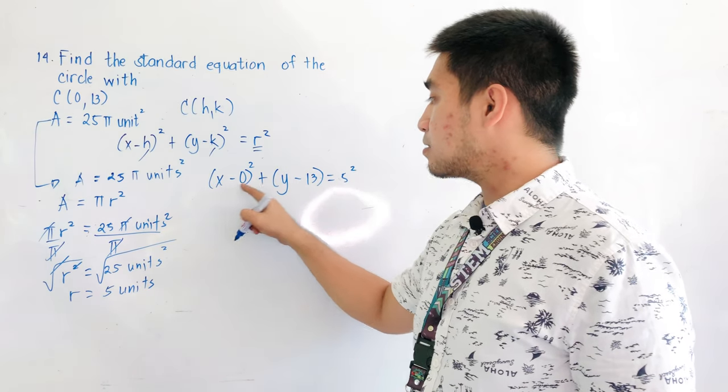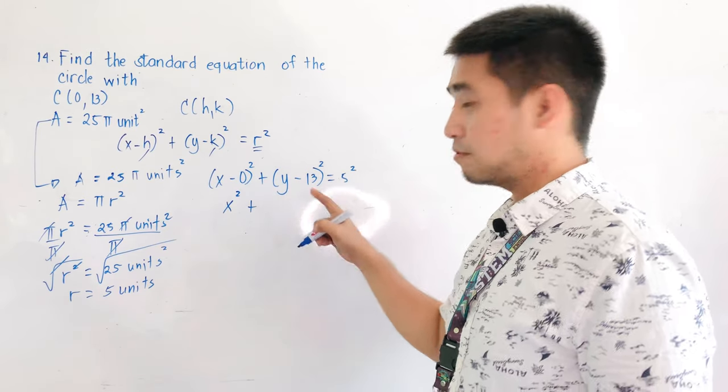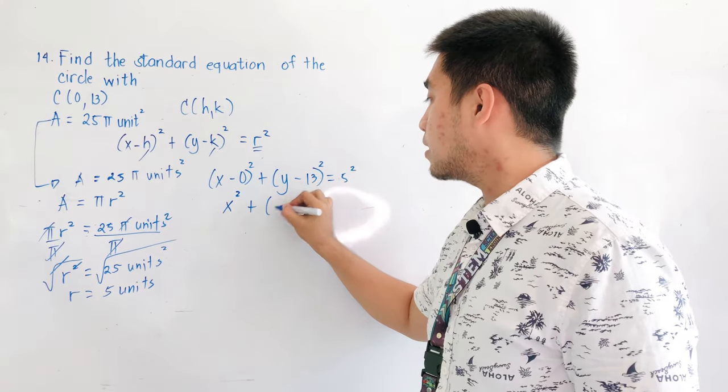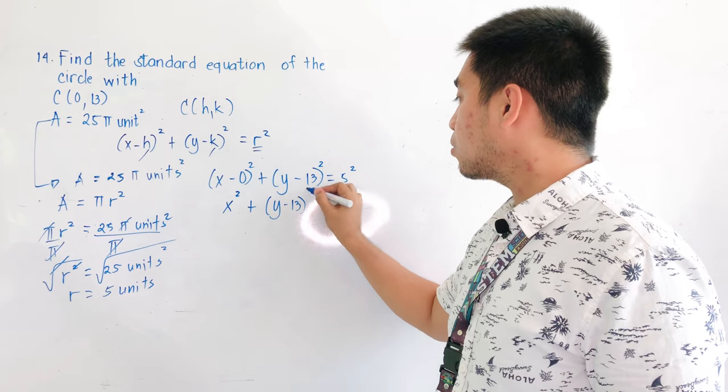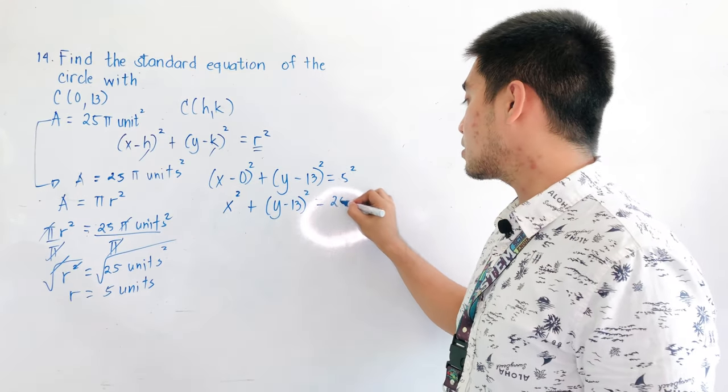Simplifying x minus 0, that is just x squared, plus, we forgot the squared here, plus y minus 13, quantity squared, is equal to what is 5 squared? That becomes 25.